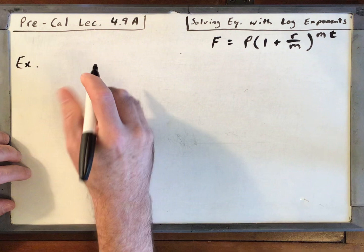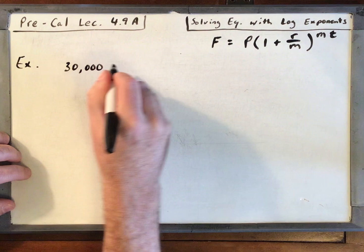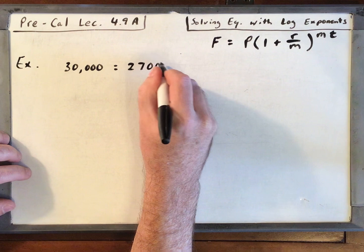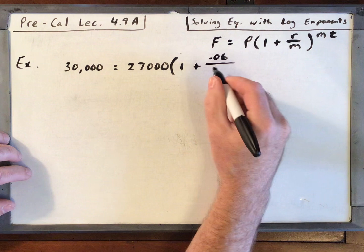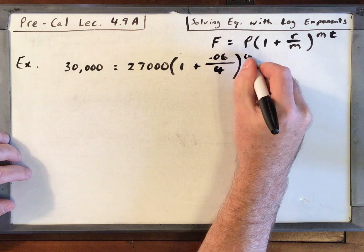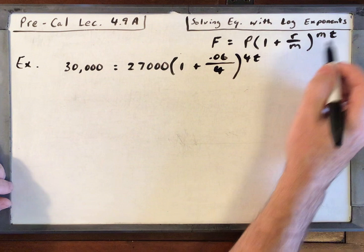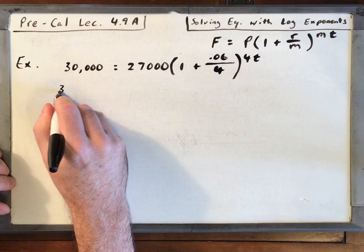So let's fill out the future value. Future value is $30,000. The current or present value, how much does he have now? $27,000. And then we've got 1 plus, interest rate is 6%, so that's 0.06. Compounded quarterly, how many times a year is that? 4. Into the 4 times T. Solving for T.